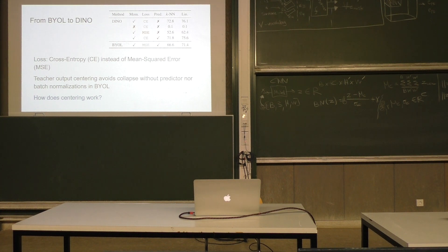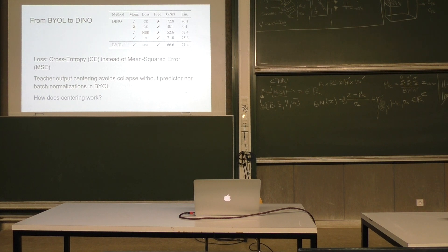This is a dot product. So if these are L2 normalized, this is 1, because after L2 normalization you have this unit hypersphere. 2 minus 2, and this is basically cosine similarity.